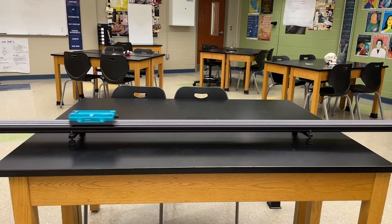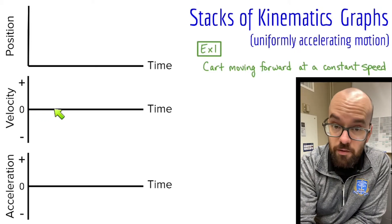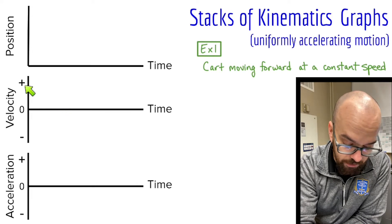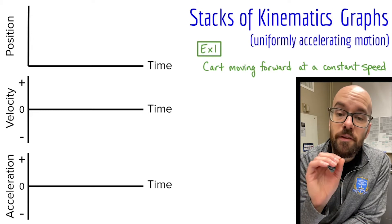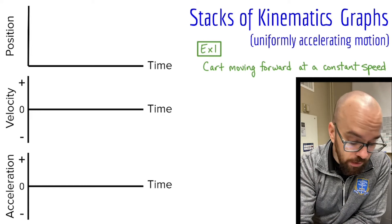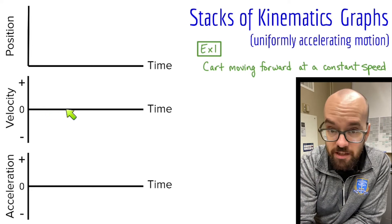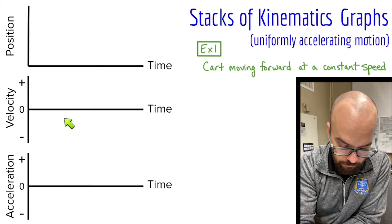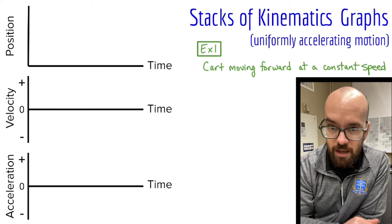Here you can see the cart moving forward — it's not getting any faster or any slower. On the velocity graph, zero velocity corresponds to the horizontal axis, positive velocity is up, and negative velocity is down. Remember, zero velocity is as slow as you can go. The farther we get away from that zero axis, the faster we're moving — fast up here, fast down there. If we're close to this axis, we're close to zero velocity, moving very slow.